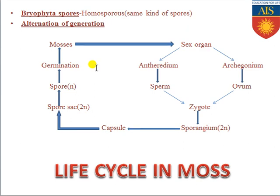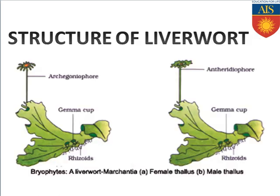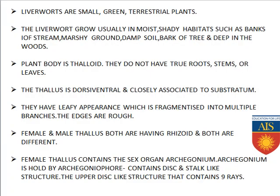There are three types of bryophytes: moss, liverwort, and hornwort. According to the syllabus, we will discuss liverwort and mosses. Hornwort is not in the syllabus but is another category of bryophytes. The example of liverwort is Marchantia. Let us see the structure of liverwort.